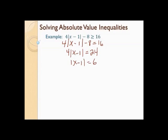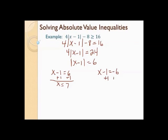Now the absolute value is isolated, so I make my two equations: x minus 1 equals 6, and x minus 1 equals negative 6. Adding 1 to both sides of each: x equals 7, and x equals negative 5.